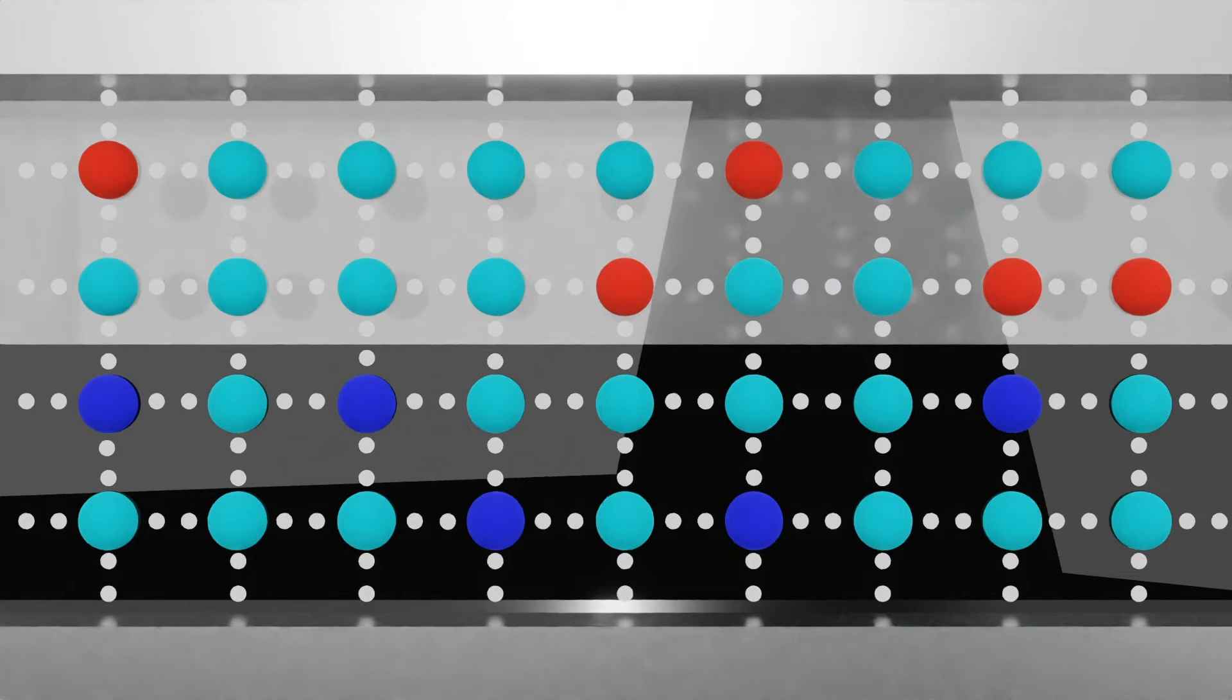Where the two types of silicon meet, electrons can wander across the p-n junction, leaving a positive charge on one side and a negative charge on the other.